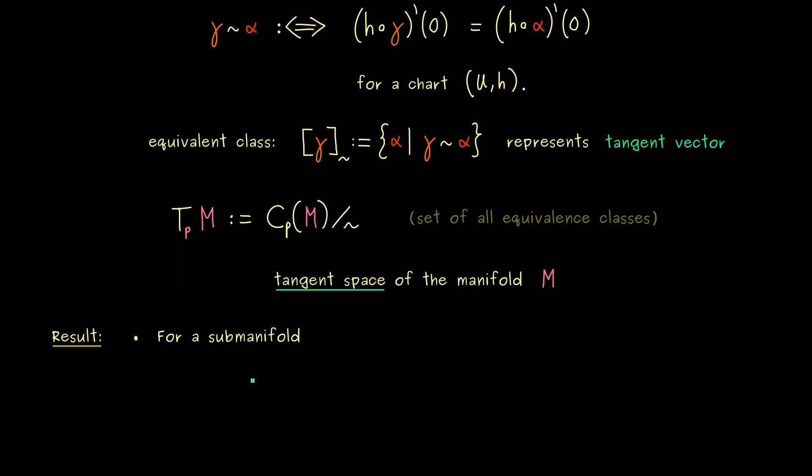First, for a submanifold, we now have two different notions for the tangent space. Namely, the common one from the last video. And now this abstract one, when we see M as an abstract manifold. However, it is not hard to see, that there is a natural bijection between them. In other words, we can see them as the same thing.